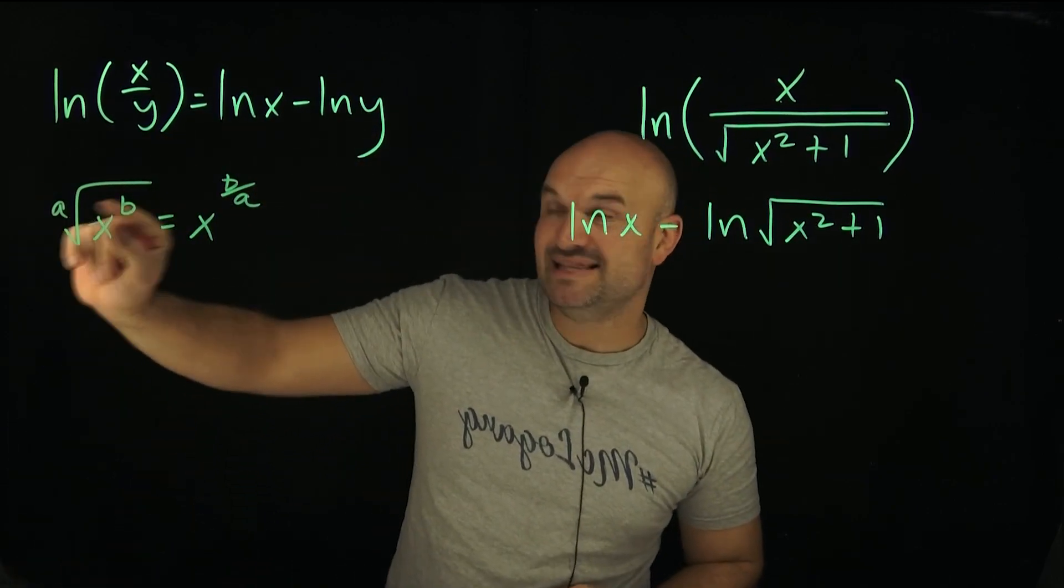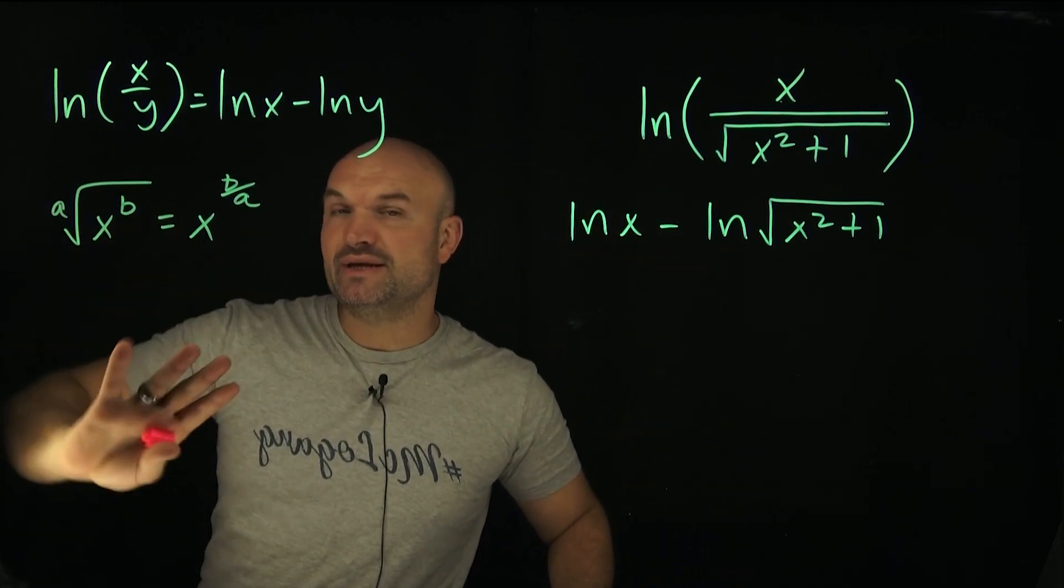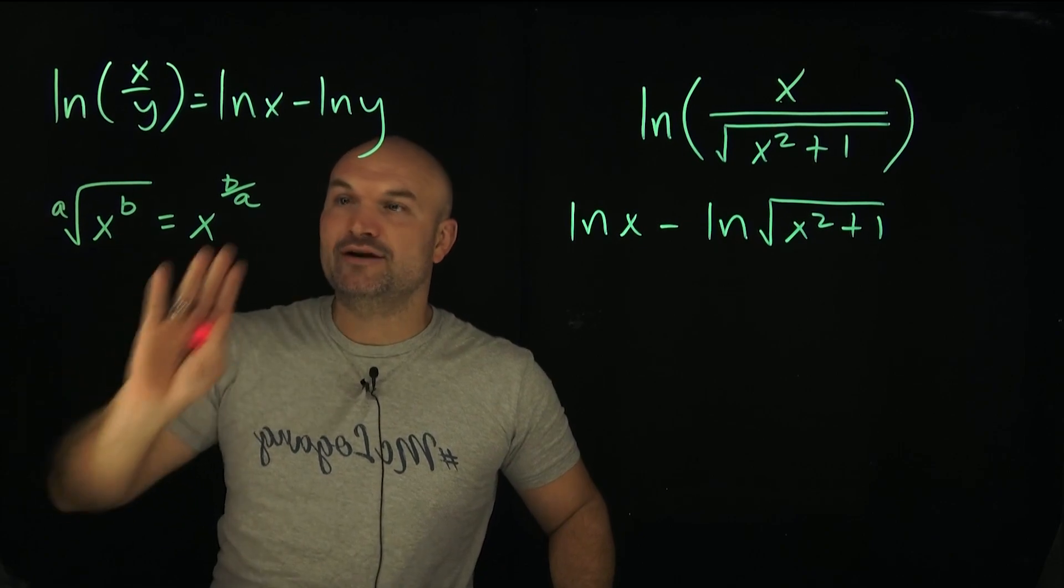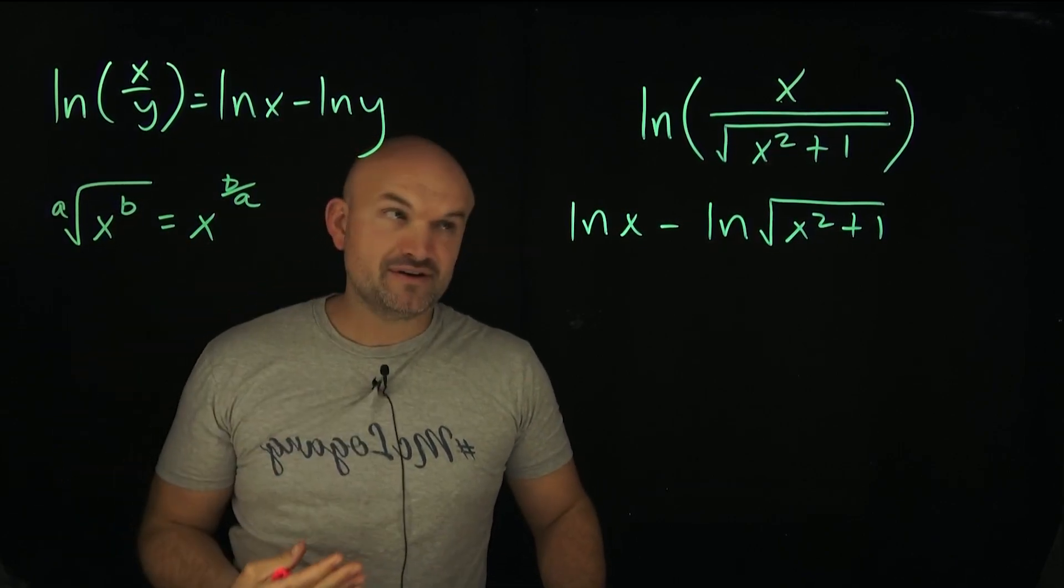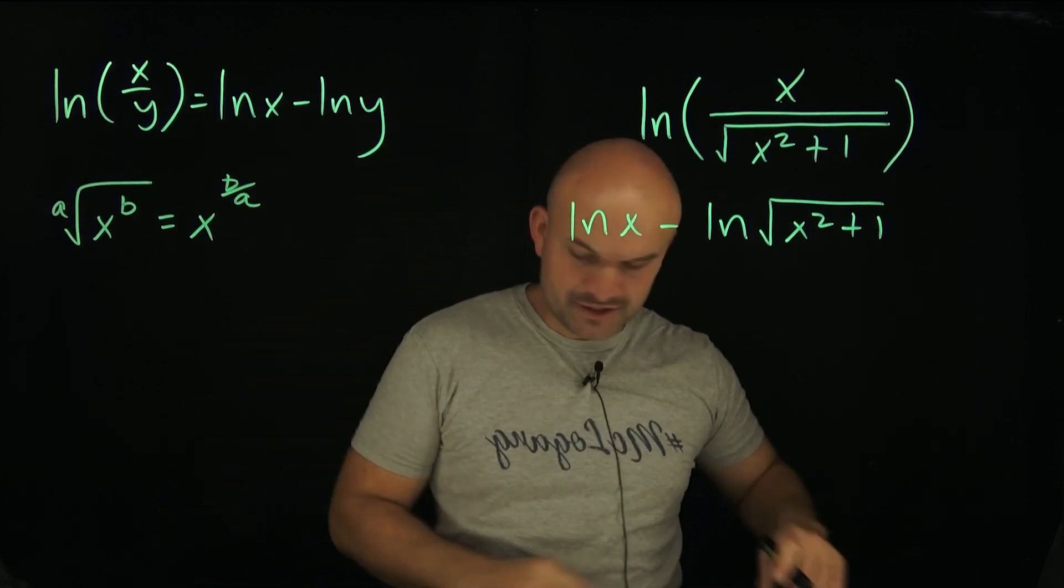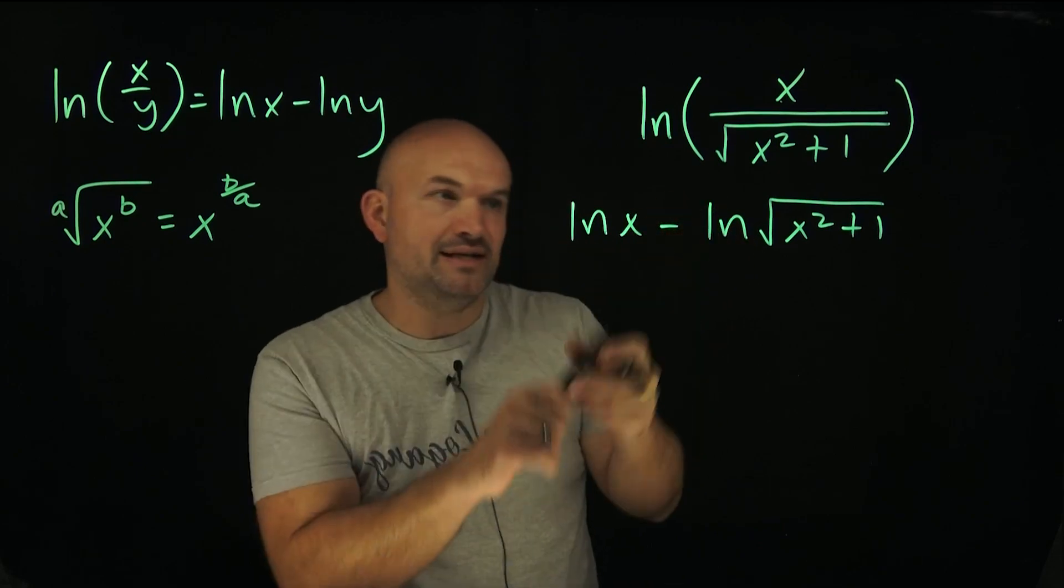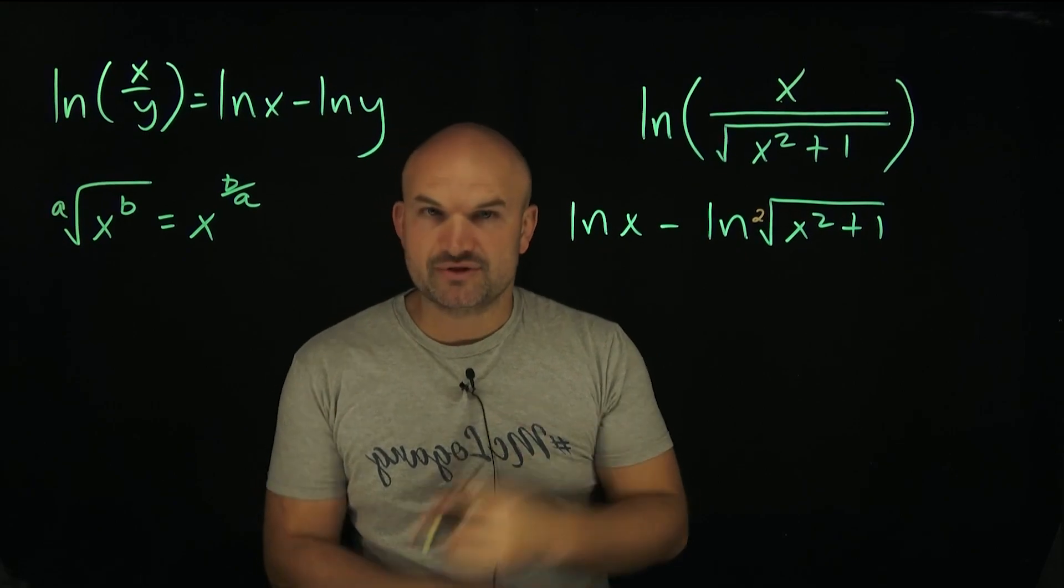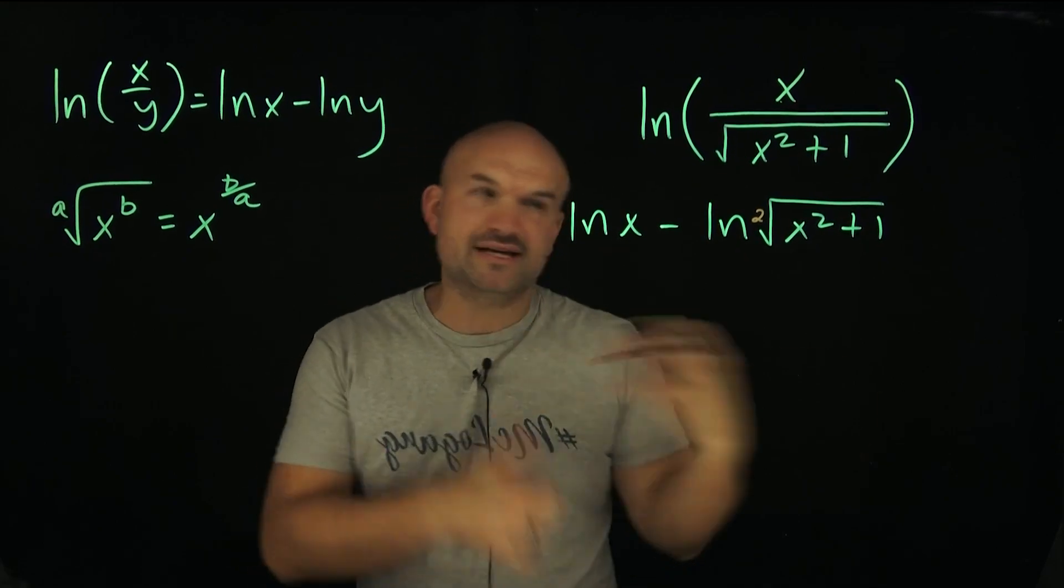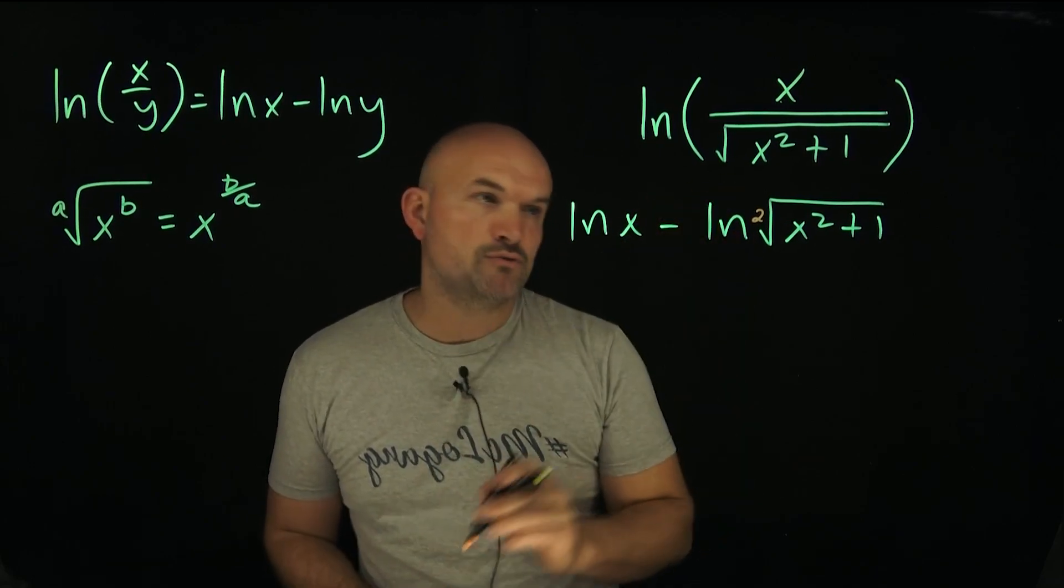So if I have—remember, this is going to be the index, and this is going to be the power of your variable. What we can do is rewrite this as x to the b over a. That's very important. Now, in this case, what I want you to see is, when we don't have an index written, we can assume that that's going to be an index of 2. That's your standard index. Unless we have the cube root or the fourth root, it's understood that that is the square root.